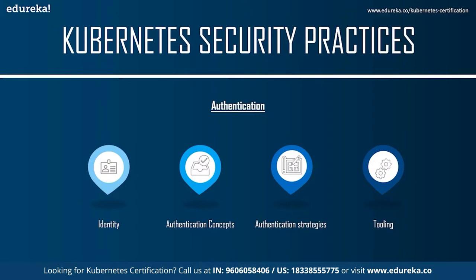The authentication flow Kubernetes uses: firstly, the client presents its credentials to the API server; then the API server uses one of the configured authentication plugins; the identity provider verifies the request information including username and group membership; if the credentials are in order, the API server moves on to check permissions — otherwise it returns an HTTP 401 Unauthorized response and the request fails. Kubernetes also supports user impersonation, where a user can act as another user, which is useful for debugging authorization issues.